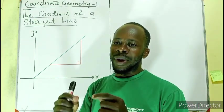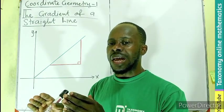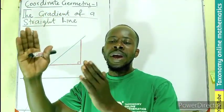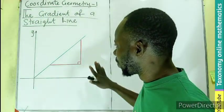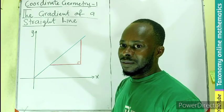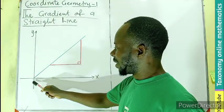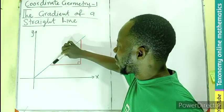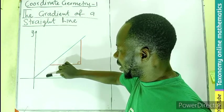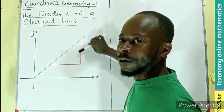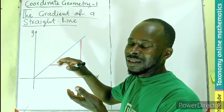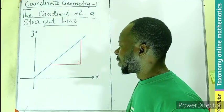How to find the gradient. When we are looking for the gradient, we are just looking for the steepness of that straight line with respect to the x-axis — how far has the line swayed away from the x-axis? The blue line shows the straight line. The gradient of this straight line is how far it moves away from the x-axis. How steep is the line from the x-axis?